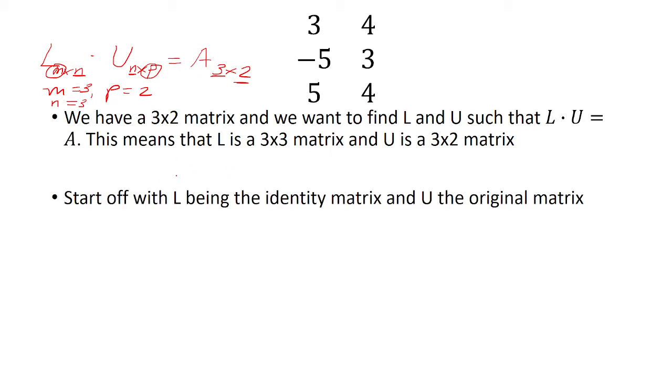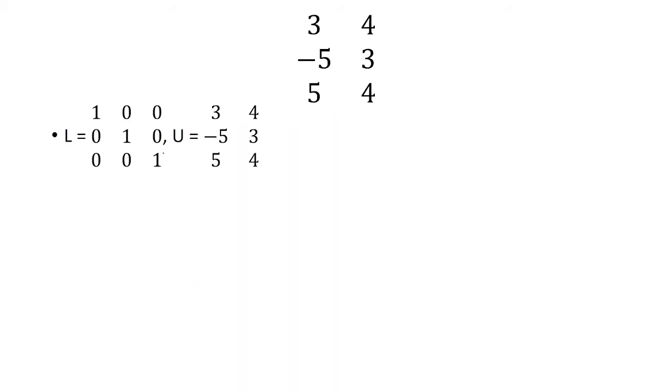So we're going to start off with L being the identity matrix and U being the original matrix. So this is what we're working with. Now what I want to do is get U to be upper triangular.